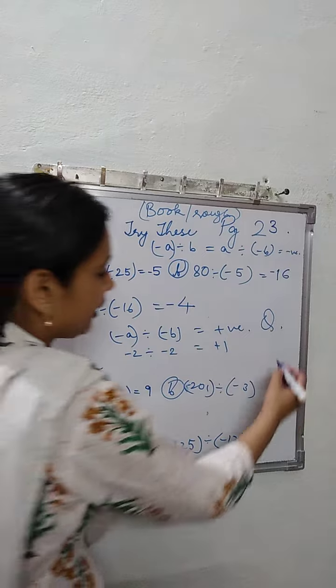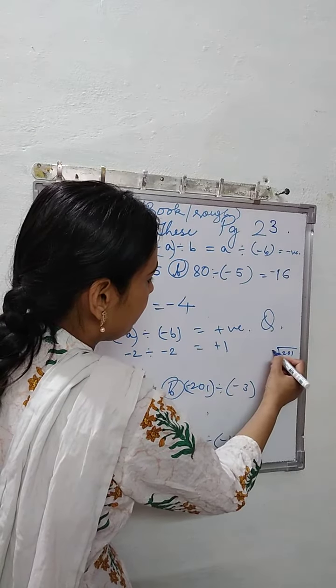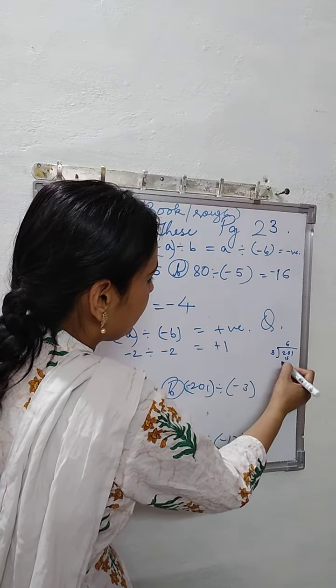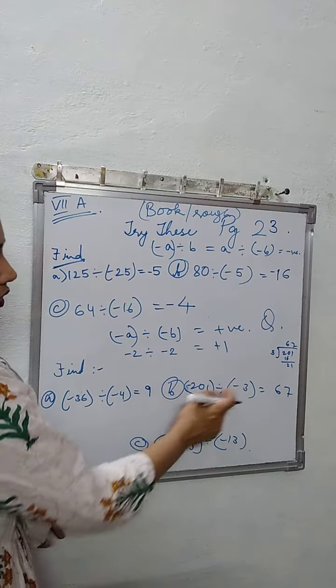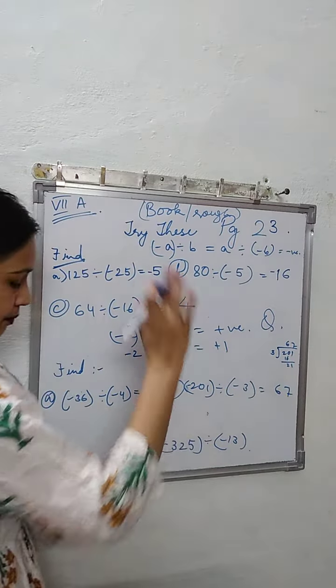201 divided by 3. We don't know, quickly we will do it here. 3 sixes are 18 and 7s are 21, so it is 67. Minus divided by minus, so it becomes plus.